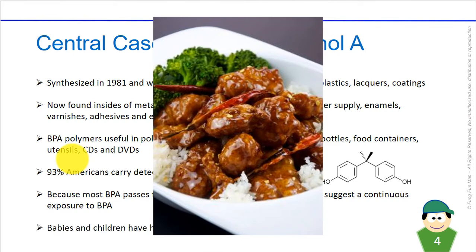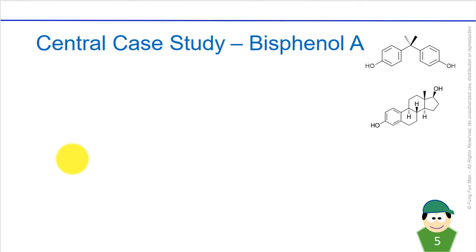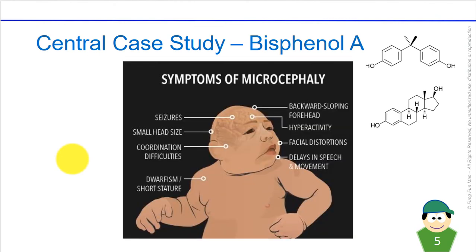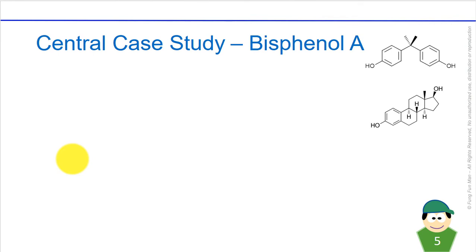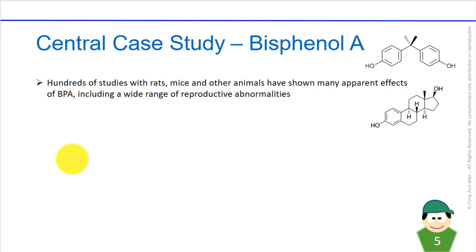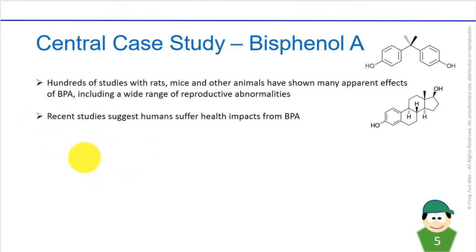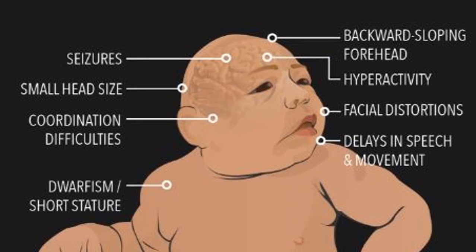So what is BPA doing to us? To address these questions, scientists run experiments in the lab on animals first — guinea pigs, mice — administering doses of the substance and measuring the LC50 and LD50 to measure health impacts. Hundreds of studies with rats, mice, and other animals have shown many apparent effects of BPA, including a wide range of reproductive anomalies, meaning the animals cannot reproduce normally or have offspring.